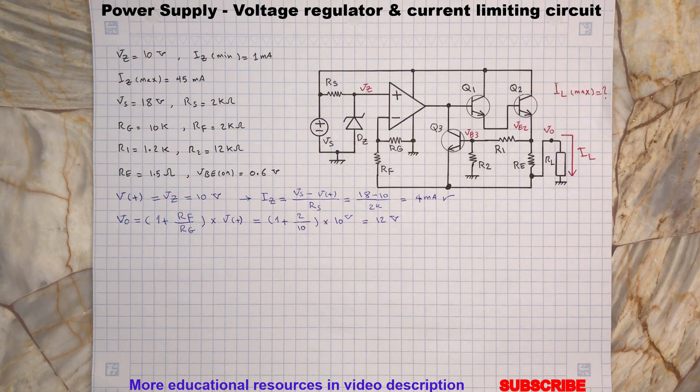Now to determine the maximum output current IL max we need to find at what condition transistor Q3 will turn on to limit the output current.